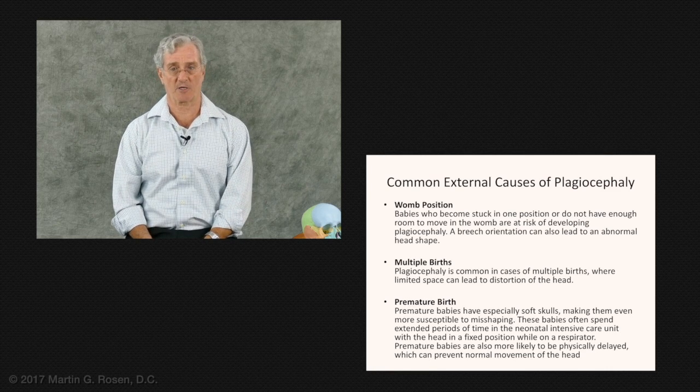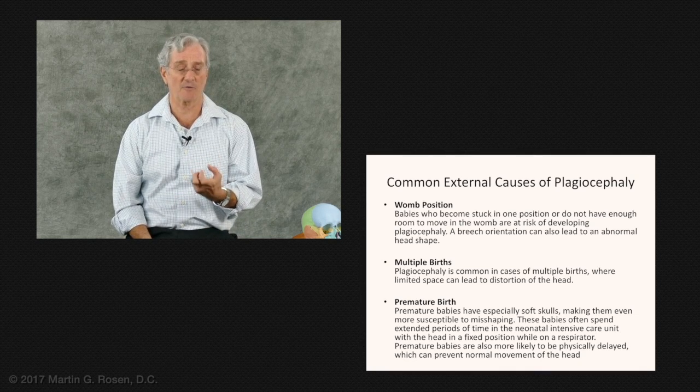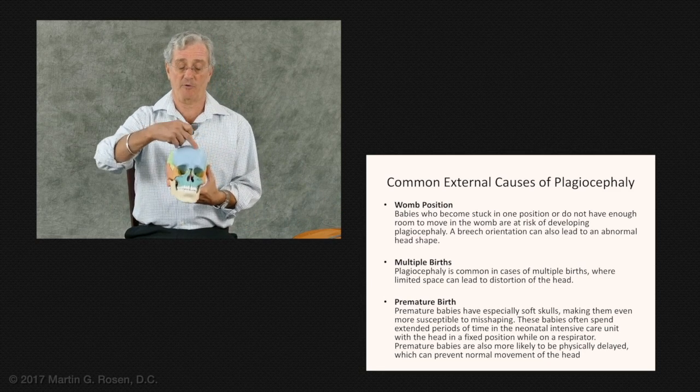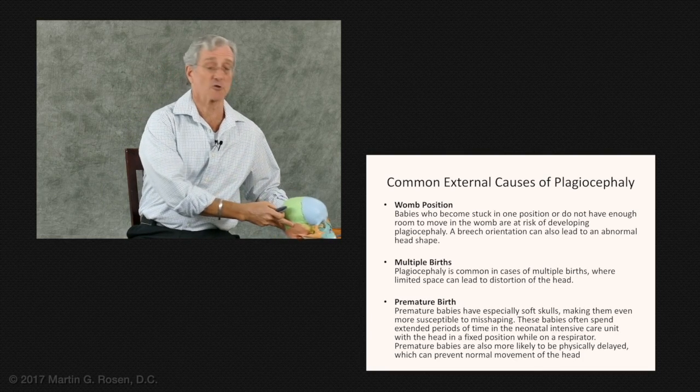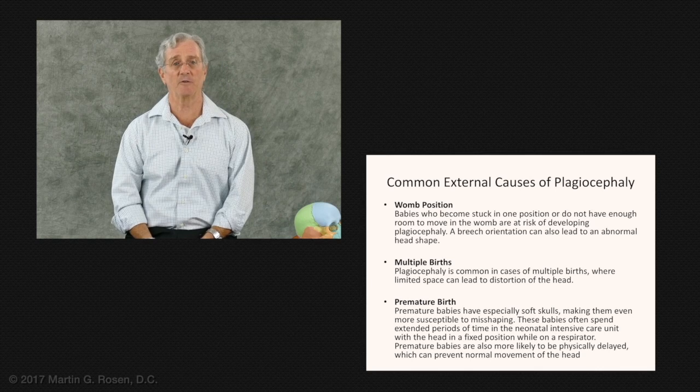Premature birth is a common factor in plagiocephaly. Premature babies have very soft skulls. The membranous portion of the skull, which is all the surrounding cranial bones - the frontal, the parietal, and the occipital bones - are very membranous in nature, so they're pliable within themselves.